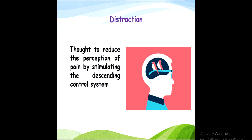The next technique is distraction, thought to reduce the perception of pain by stimulating the descending control system. If a patient is in pain, distract their mind by using TV or mobile phones. As the mind becomes distracted, pain intensity decreases because the descending pathway becomes inhibitory, preventing pain impulses from reaching the effector organ.